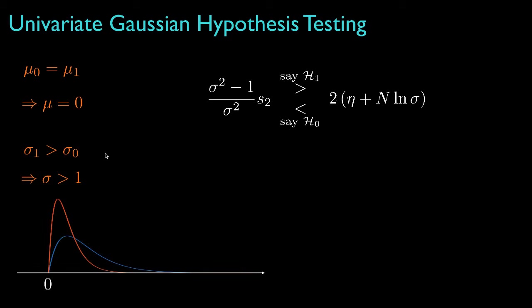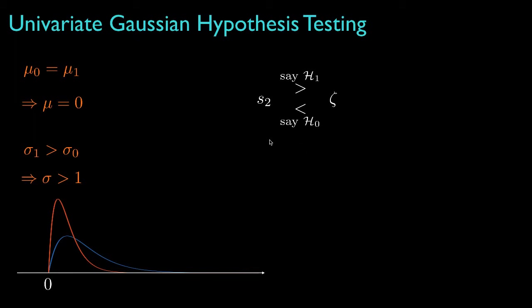If sigma_1 is greater than sigma_0, the parameter sigma will be greater than 1, and the densities for the test statistic might look like this, where the blue line is the density for H1 and the red line is the density for H0. If sigma_0 is greater than sigma_1, then the plots would be reversed. For our example, let's suppose that sigma_1 is greater than sigma_0, so that the coefficient that multiplies S2 will be positive. In that case, we could absorb that term over into the threshold without changing the directions for the decision inequalities, and the decision test statistic might look like this.